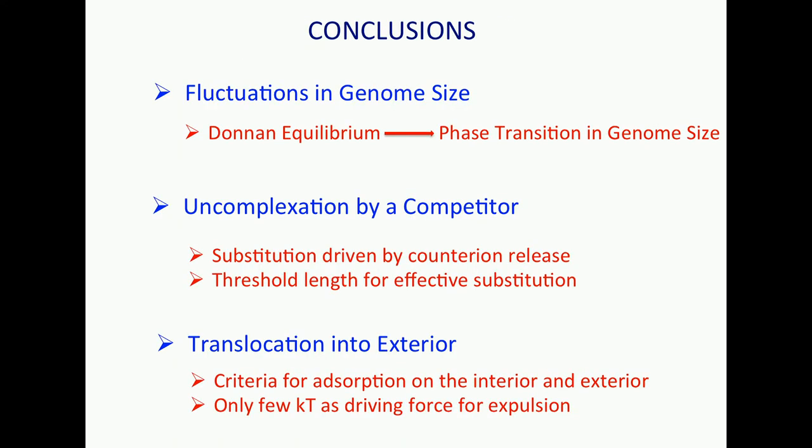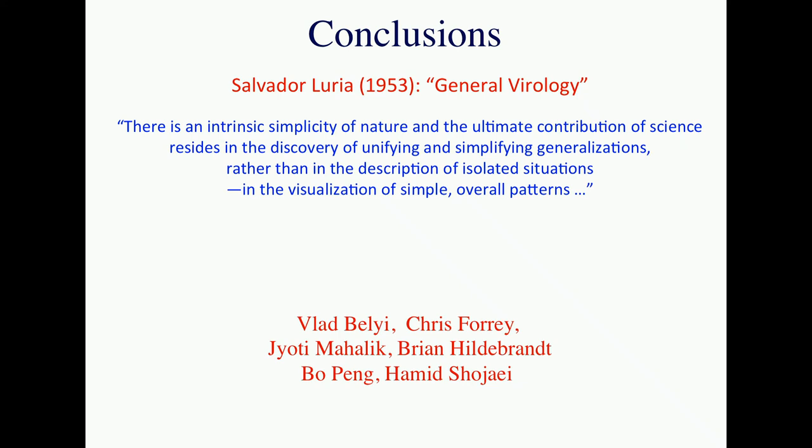So with these arguments, then let me conclude by saying that, regarding the fluctuations in the genome size, Donnan equilibrium tells me that there is a phase transition in genome size. Beyond certain amount of genome, according to this argument, it is not stable. Uncomplexation by competitor, substitution driven by counter ion release, and the threshold length for effective substitution is really finite, very small. I believe this uncomplexation is probably taking place in the cellular environment by salt gradient, not by bringing a competitor. I thought there was going to be some competitor which was going to break it back up. I do not know, but I think that seems to be possible. Finally, in terms of translocation to exterior, the criteria for adsorption on the interior and exterior can be very easily derived. Only a few kT are the driving force for expulsion. I think I'm pretty much done. Once more, I love this quote from Luria. I must say that again. And I'm very grateful to my students. Thank you very much.